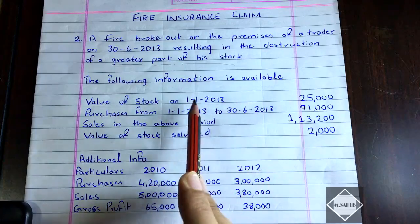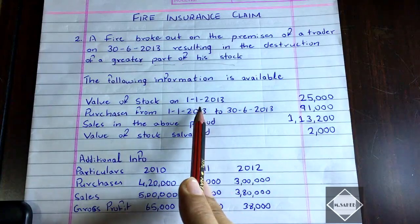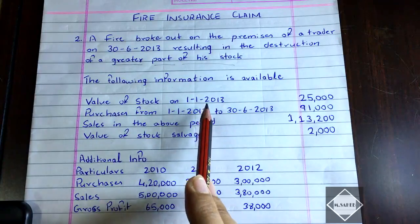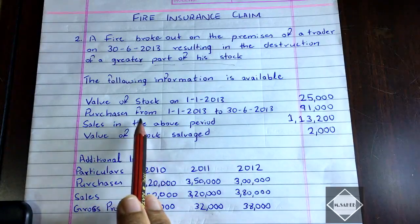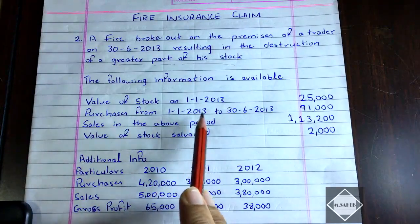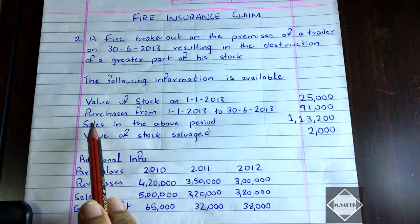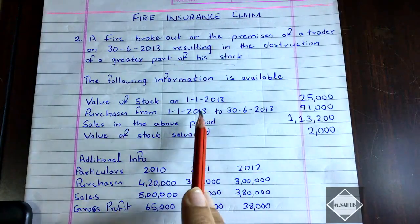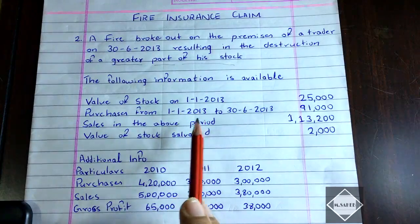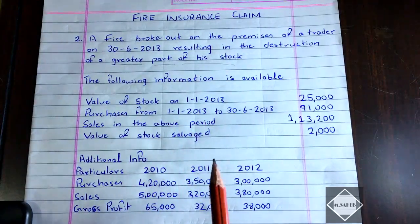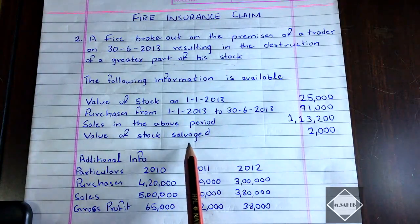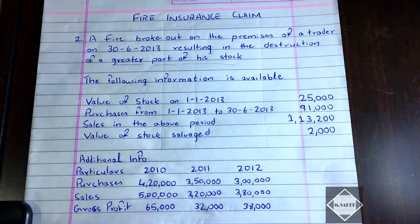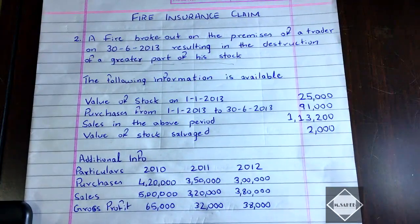The value of stock on 1/1/2013 is given — that is the opening stock for the current year when the fire occurred. Purchases from 1/1/2013 to 3/6/2013 and sales for the same period are also given, up to the date of the fire. Then the value of stock salvaged is given as 2,000 — that is the stock saved from the fire.